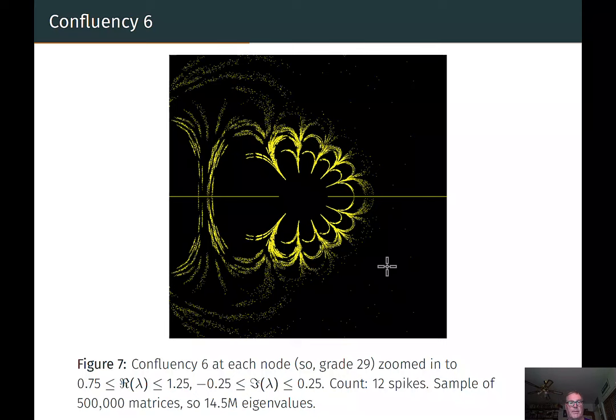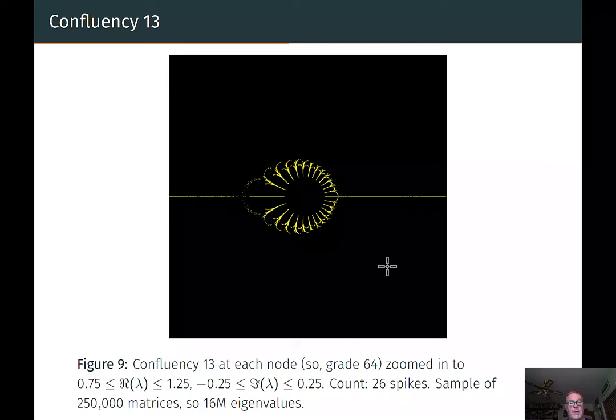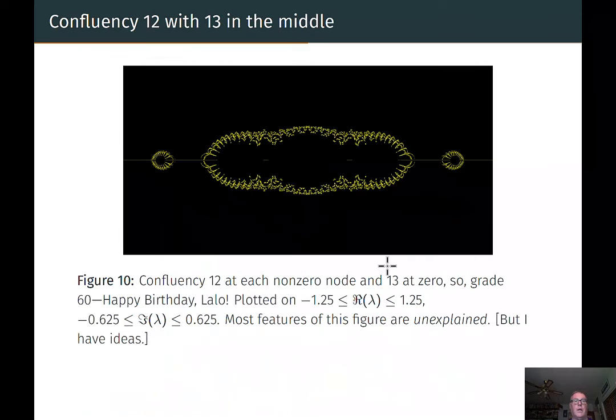Here I up the confluency. Instead of just evaluating the derivatives or specifying the derivatives up to the third derivative, we specify the derivatives up to the fourth derivative at each node. And so the grade of the polynomials, we have five nodes and five pieces of information at each node. So that's 25 pieces of information. So that means the degree must at most be 24. The word grade there means that the degree at most. And we count 10 spikes. So with two pieces of data, we say, aha, with confluency four, we had eight spikes and confluency five, we have 10. There must be two times the confluency number of spikes around there. So this is not computing all of the roots of the polynomials, but rather a sample of 500,000 polynomials. And so that means 12 million roots. Now I've written their sample of 500,000 matrices. And so 12 million eigenvalues.